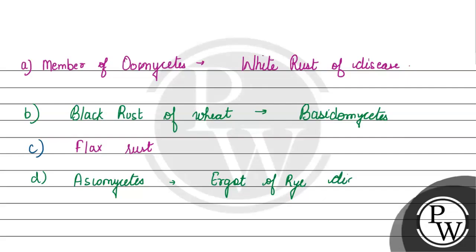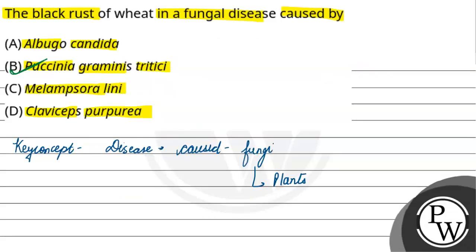So, if you want to see here, the correct option is Puccinia — option B. Hope it is clear.